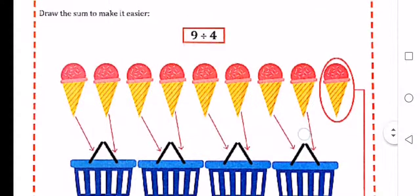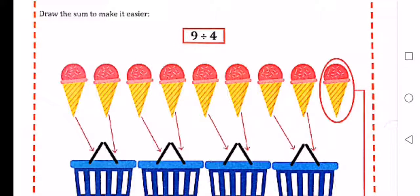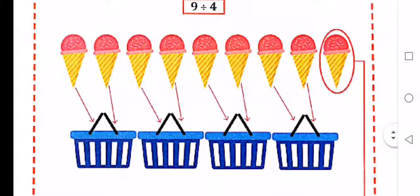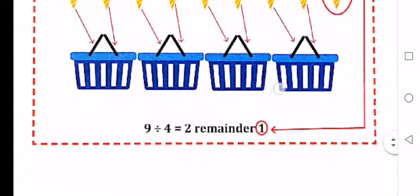Draw the sum to make it easier. 9 divided by 4. So you're going to draw 9 ice creams, draw 4 baskets, and then you match the ice creams to the basket until you've got an equal amount. Each basket will get 2 ice creams, but 1 ice cream remains.